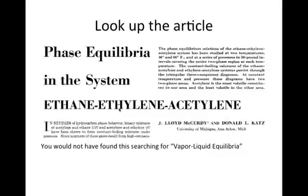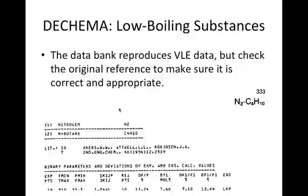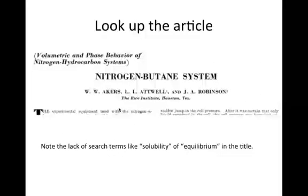Look up the article with the reference, use the library catalog, and download the paper. If you use the data bank in the low boiling substances Chemical Data Series, the directions are similar to the literature surveys. You find your system the same way, but go to a different part of the book — in this case, pages 333 to 335. You will get both a reference and a table of reproduced data. The data bank also helps by showing the experimental values before having to select an article to investigate. Again, use the reference to look up the original research in the library catalog.